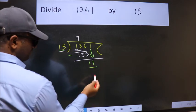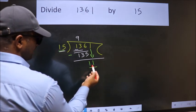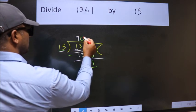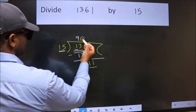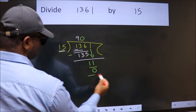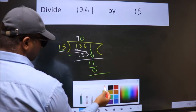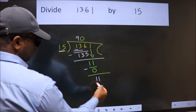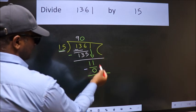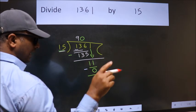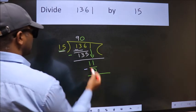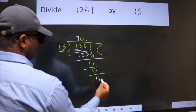But 15 is larger than 11. So what we do is, we take 0 here. So 15 into 0, 0. Now we subtract, we get 11. Over here, we did not bring any number down, and 11 smaller than 15. So now we can put dot and take 0.